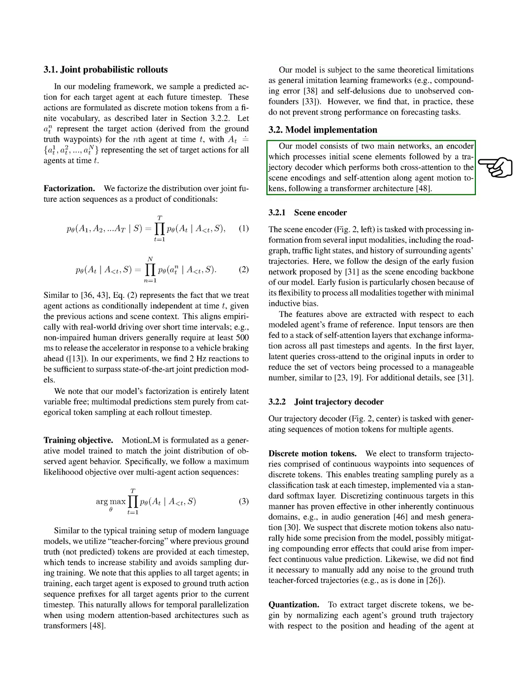Our model is made up of two main networks, an encoder and a trajectory decoder. The encoder processes the initial elements of the scene, and the trajectory decoder performs both cross-attention to the scene encodings and self-attention along agent motion tokens. The scene encoder processes information from several input sources, including the road graph, traffic light states, and the history of surrounding agents' trajectories. We use an early fusion network to encode the scene because it can process all modalities together with minimal bias. The features are extracted with respect to each agent's frame of reference. The input tensors are then fed to a stack of self-attention layers that exchange information across all past time steps and agents.